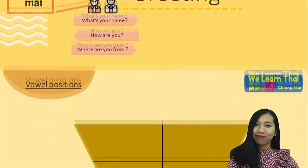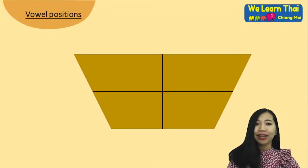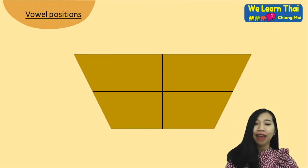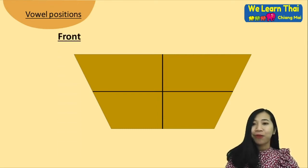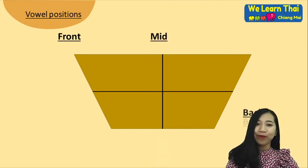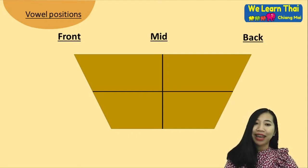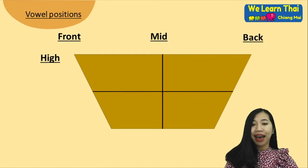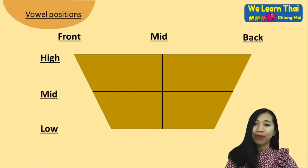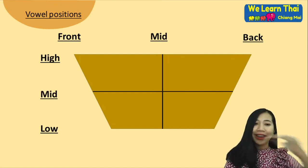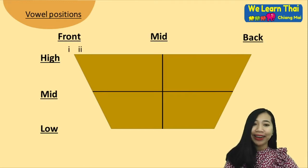For vowel positions, you can see the chart here. This chart explains how your mouth and your tongue are positioned. There are nine sounds and nine pairs. We have the front, the middle, and the back — referring to where your tongue is positioned. We also have the high, the middle, and the low, talking about how the height of the tongue is going to be. The first one we have is 'i' — the mouth is spread out and the tongue is in the front, like 'i'.